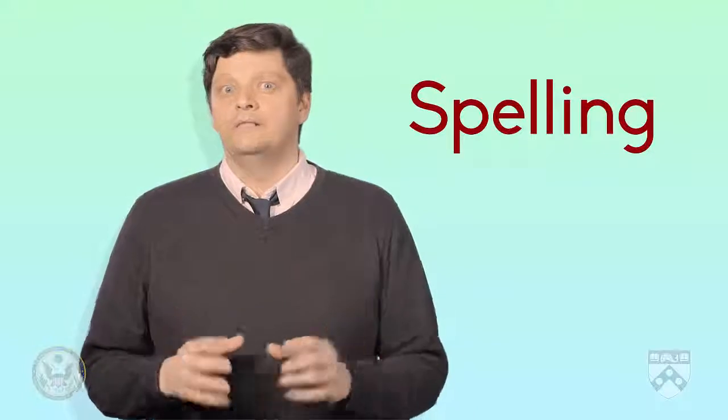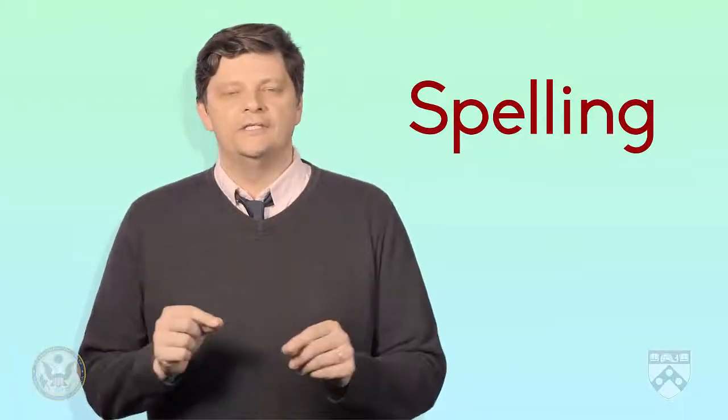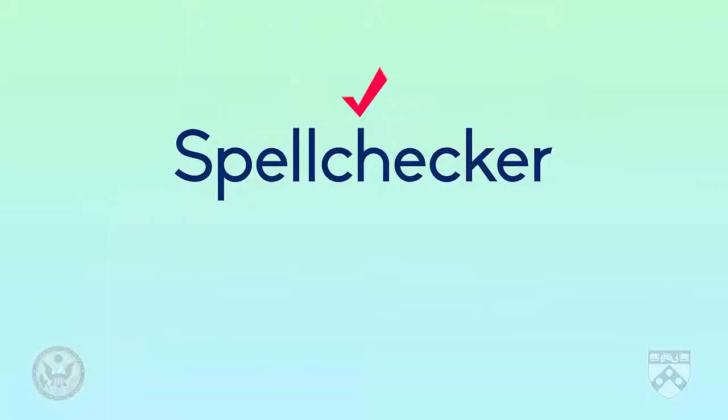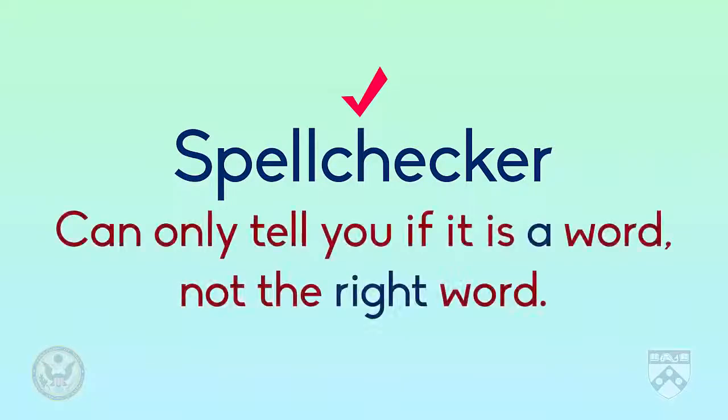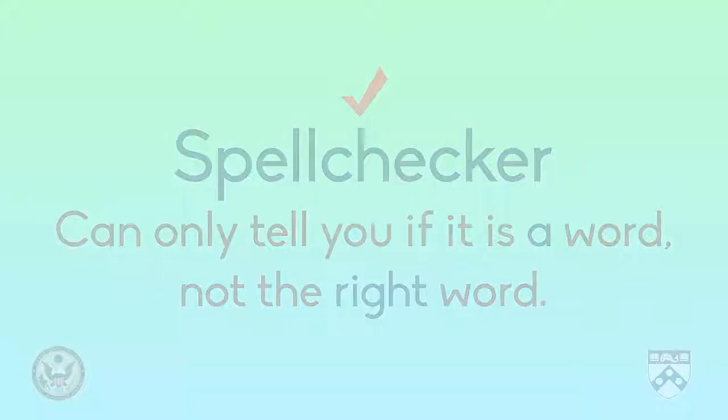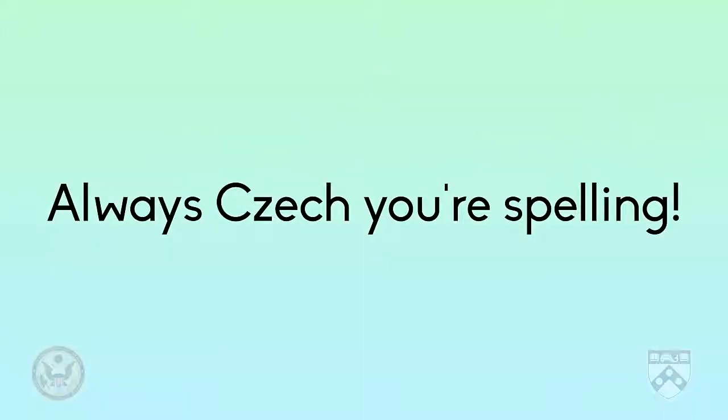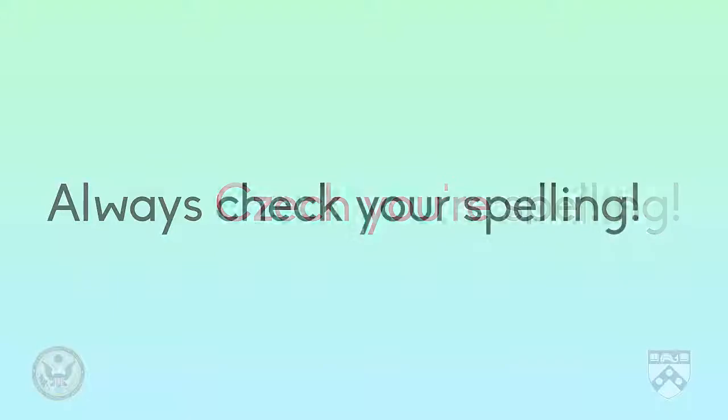Spelling is the last part of proofreading we're going to look at in this video. The spell checker in your word processing program can help with this. But remember, a spell checker can only tell you if it is a word, not the right word. In this example, Czech is a person from the Czech Republic, so it is a word that a spell checker will recognize, but it is not the word you want to use. Your is a contraction of you are, and again, a word but not the right word.